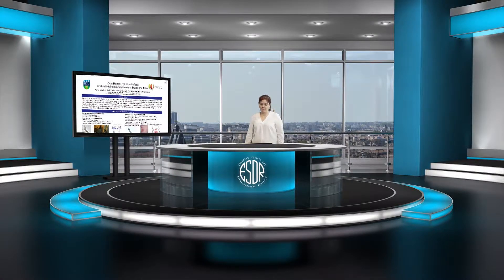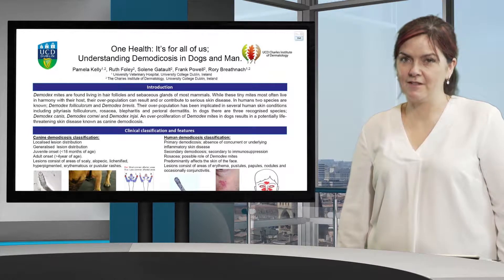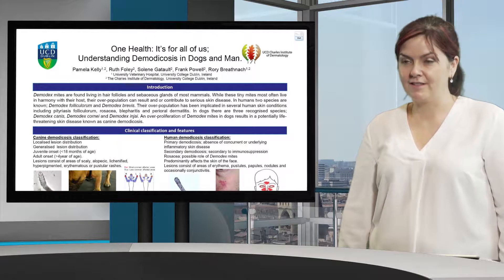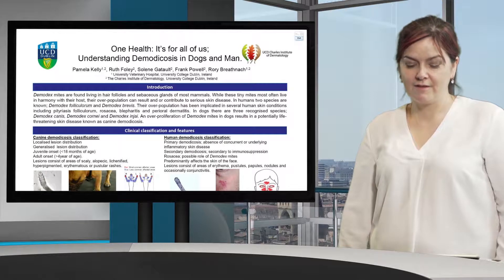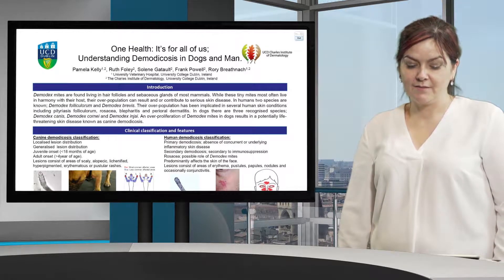This poster represents the start of a new inter-collaborative research project between veterinary medicine and human medicine, focusing on veterinary dermatology and human dermatology. The project is focused on demodex mites, which are present in both humans and animals. In humans, demodex mites live in hair follicles and sebaceous glands, and the two main species are Demodex folliculorum and Demodex brevis.